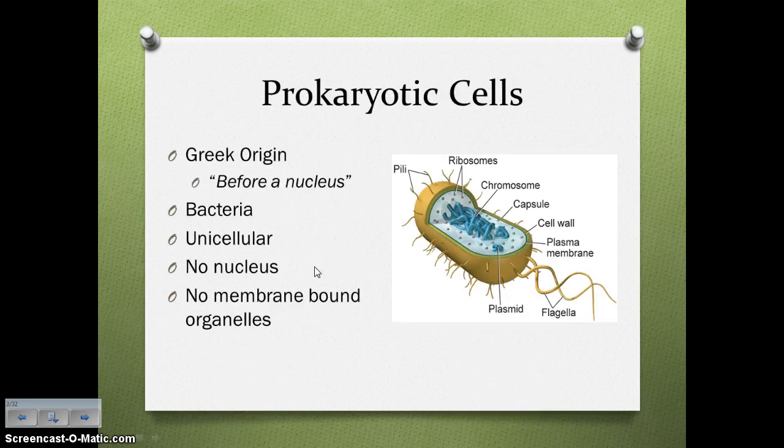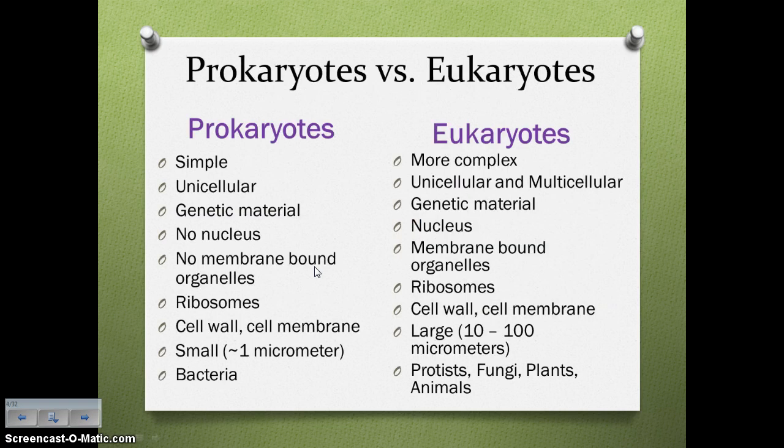What does the word prokaryotic mean? It has a Greek origin, which actually means 'before a nucleus.' So we're talking about unicellular prokaryotic bacteria. Before a nucleus — prokaryotes have no nucleus, and they have no membrane-bound organelles. None of that fancy mitochondria, chloroplast, anything like that. Use this information to help you fill in the Venn diagram under number 3.